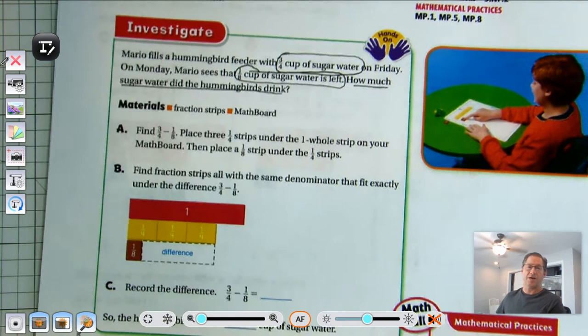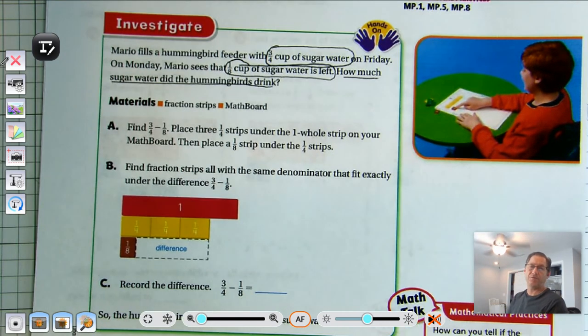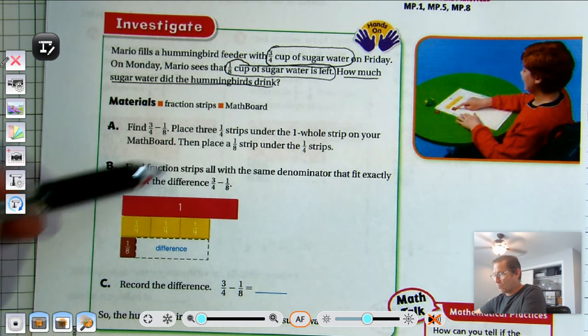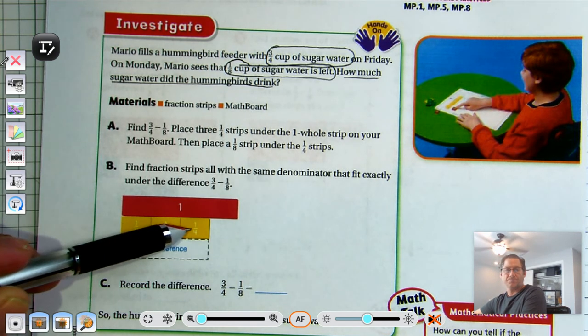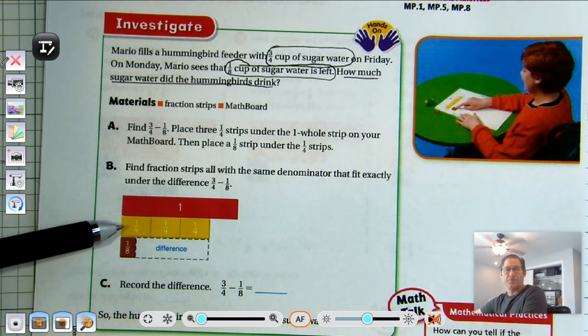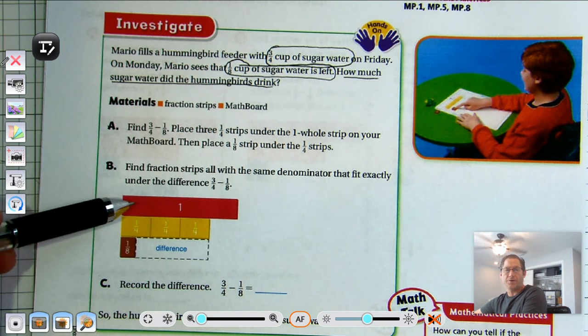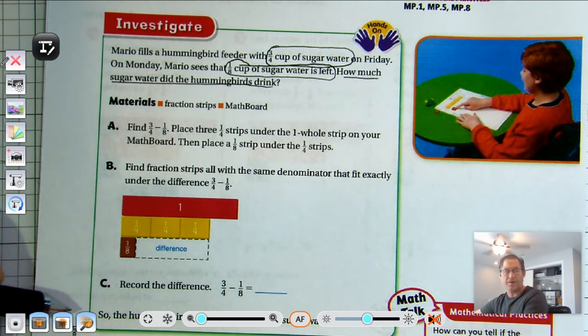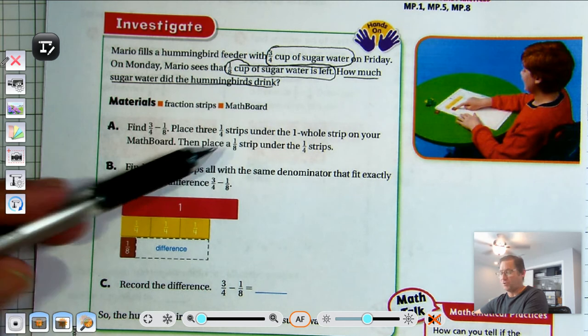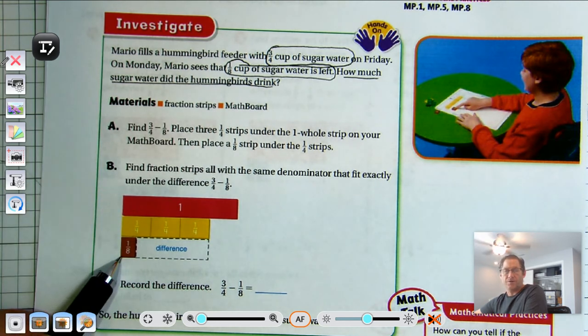So we can use fraction strips. And so to find three-fourths minus one-eighth, you would place three one-fourth strips under the one-hole strip on your math board or on your paper. And then you're going to place a one-eighth strip under the one-fourth strips.